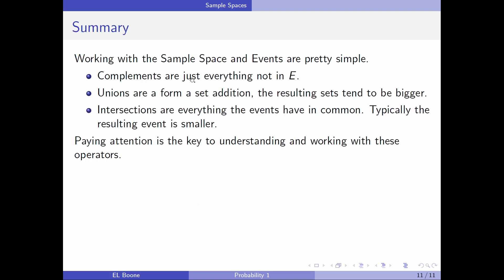Summary, we can work with sample space and events. They're pretty easy. Complements are just everything not in E. Unions form sort of a set addition. You can think about it as combining them together because the set tends to get bigger. Intersections are everything that the events have in common, so typically the resulting event is smaller. So if you're looking at this, if your event got bigger when you start intersecting, then you probably did something wrong. Paying attention is the key to understanding how these things work. And that's the big thing. Just pay attention and you can figure these things out pretty easily.